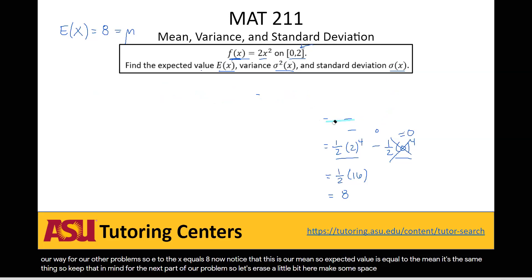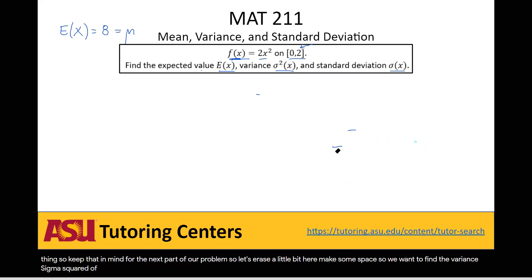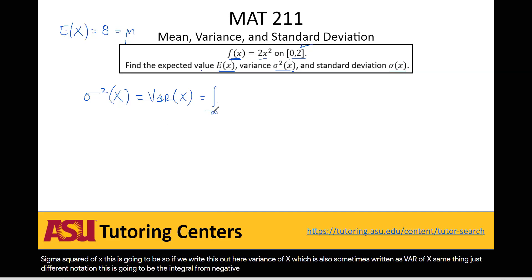So next we want to find the variance sigma squared of x. This is going to be, so if we write this out here, variance of x, which is also sometimes written as Var(x). Same thing. Just different notation. This is going to be the integral from negative infinity to positive infinity of x minus mu,